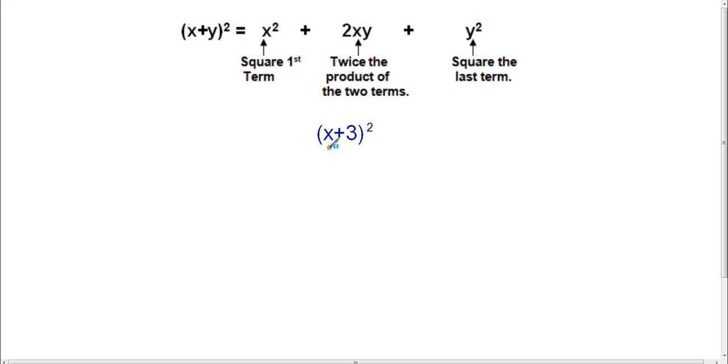So we're just going to say x is our x term and 3 is our y term. So our formula says that the first thing that we need to do is square the first term, x squared. Here we have x as well, so x squared, we're going to square the first term, plus we're going to do 2 times x times y. So x times y is x times 3.